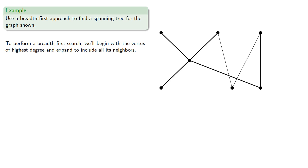Now, we'll eventually go to every one of these adjacent vertices. But again, if the goal is to expand our network as quickly as possible, we'll go to the neighbor with the highest degree and expand to include all its neighbors. And so the vertex of highest degree is this one. And we'll expand.